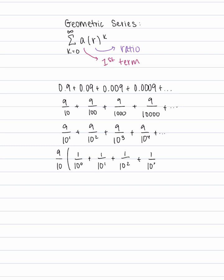Our first term is going to be 9 tenths, but what's our ratio going to be? Well notice each time to get from one term to the next we have to multiply by 1 tenth. So our ratio is going to be 1 tenth.